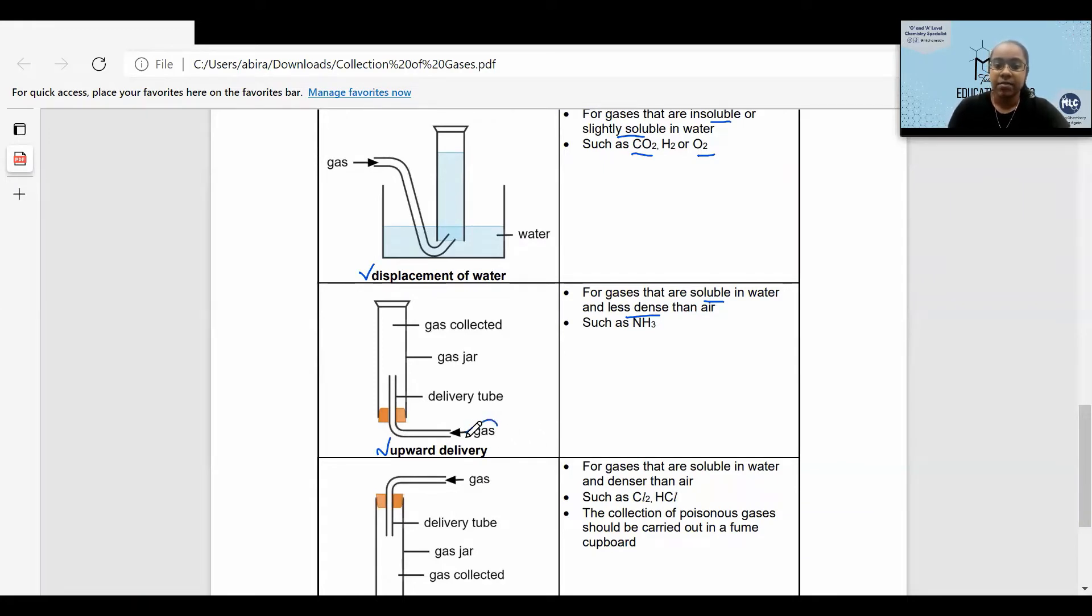Your gas is supplied through the delivery tube, and since your gas is less dense than air, your gas will travel upwards and it will be collected in the gas jar. One example is ammonia.